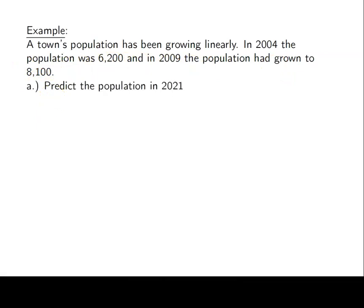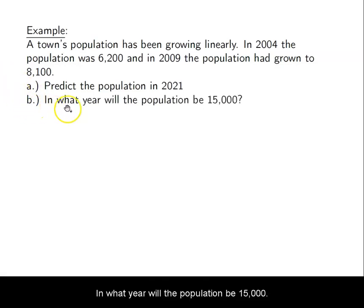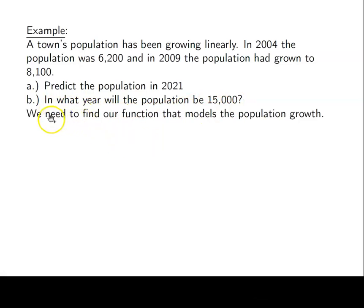A, we want to predict the population in 2021. B, in what year will the population be 15,000? In order to solve either of these, we need to find the function that models our population growth. I know it's going to be a linear function because it's growing at a constant rate, it's growing linearly.